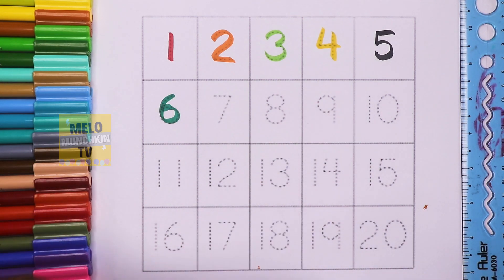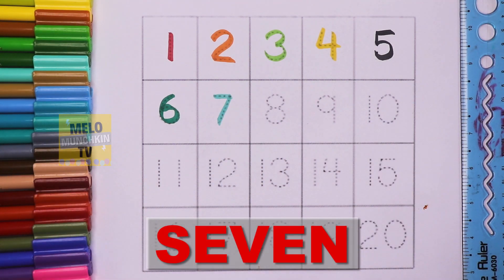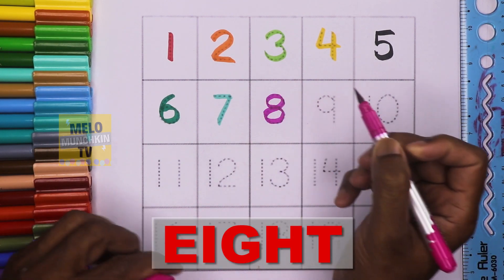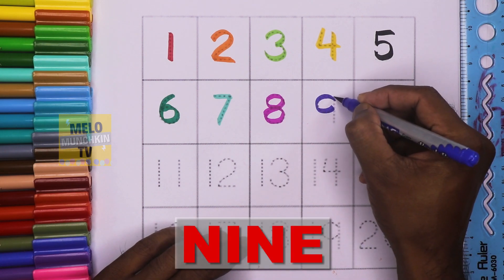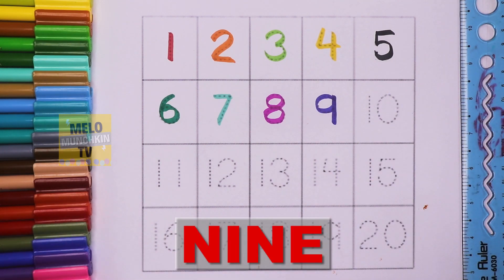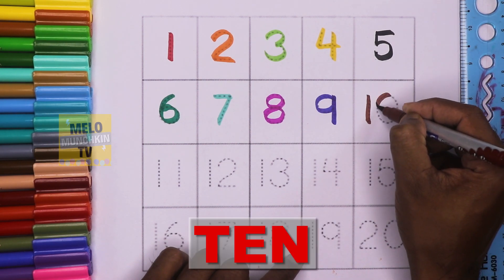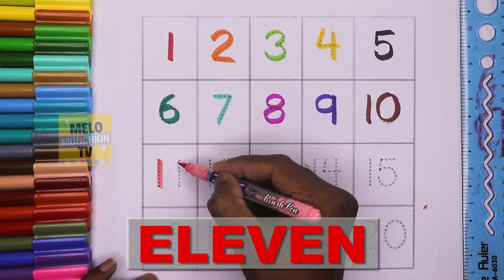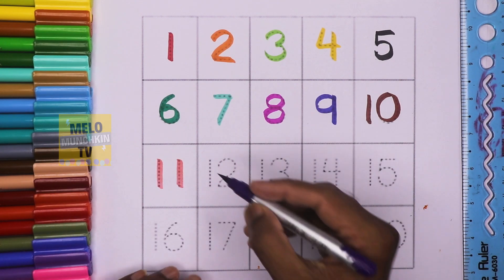Number seven: S-E-V-E-N, seven. Number eight: E-I-G-H-T, eight. Number nine: N-I-N-E, nine. Ten: T-E-N, ten. Eleven: E-L-E-V-E-N, eleven. Twelve: T-W-E-L-V-E, twelve.